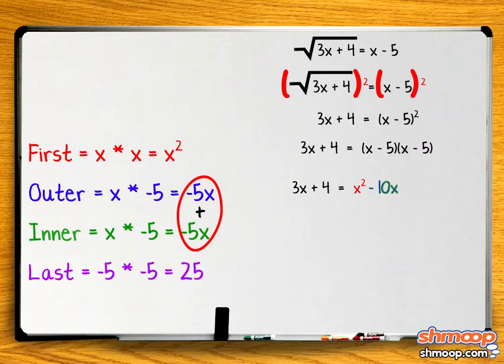Our new equation now reads 3x plus 4 equals x squared minus 10x plus 25.